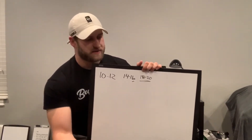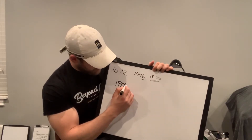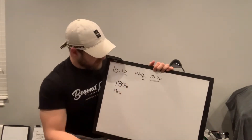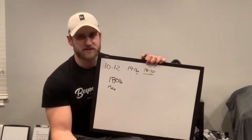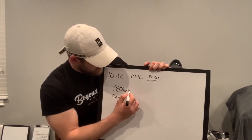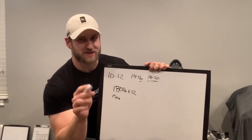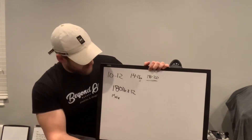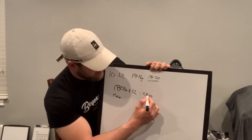Let's jump into an example. We have a 180-pound male who wants to lose weight but eat as much as possible while still losing. We start at the high end of the losing range, so 180 times 12 equals 2,160 calories. That's the rough starting point for this person's daily calorie target.